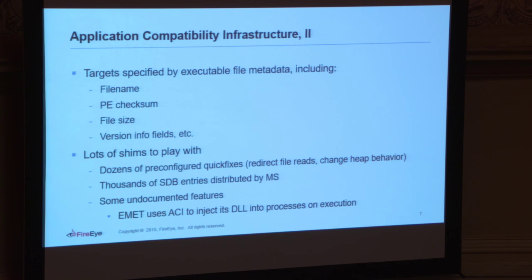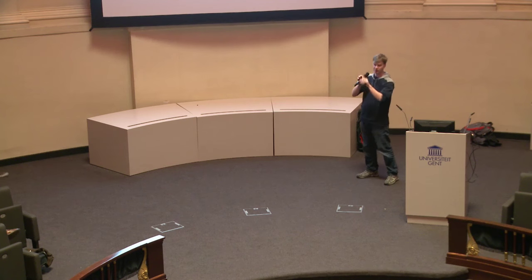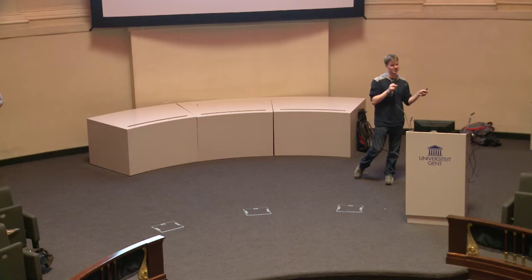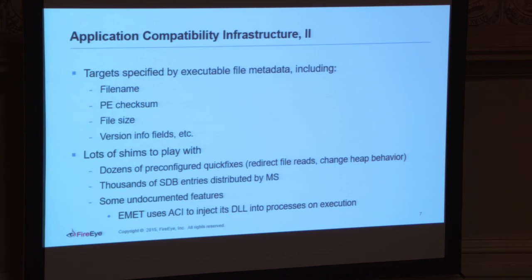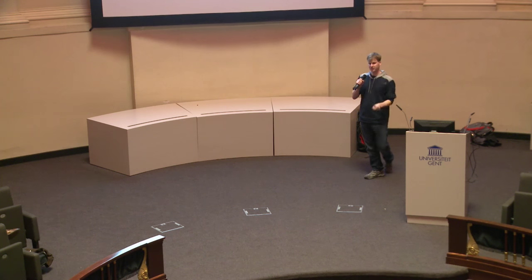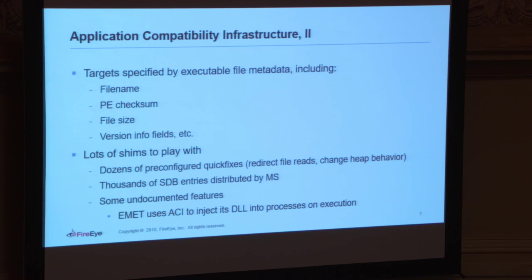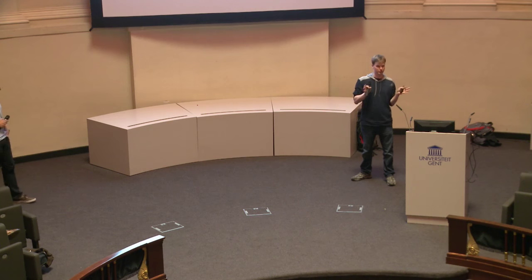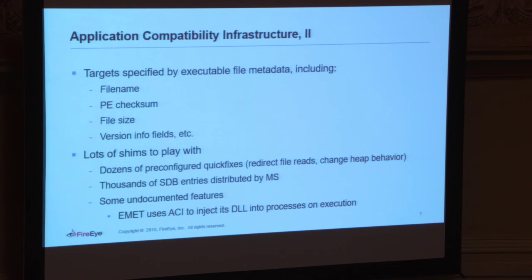Inside each of these shim entries, you have a file name, a PE checksum, file size, version info — all pointing towards the actual target application you're trying to modify or fix. You have these pre-configured quick fixes, and there are about 407 of them. You can modify an application any way you want: inject different shellcode, turn off Windows Defender, make it run as admin, virtualize a registry. EMET actually uses this infrastructure to inject its DLL into processes on execution.